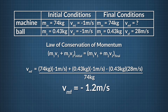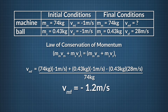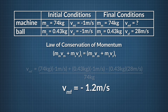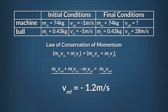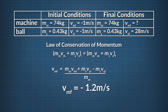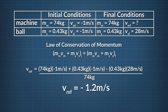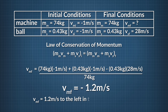Starting with the law of momentum conservation, in this case the initial momentum of our system is not zero — both the machine and the soccer ball are initially moving at negative 1 m/s. We want to solve for the final velocity of the machine. We subtract the final momentum of the soccer ball from both sides, then divide both sides by the machine's mass. The final velocity of the machine equals the mass of the machine times its initial velocity, plus the mass of the soccer ball times its initial velocity, minus the soccer ball's mass times its final velocity, all divided by the mass of the machine. Plugging in all our numbers, we find that the final velocity of the machine is negative 1.2 m/s, or 1.2 m/s to the left.